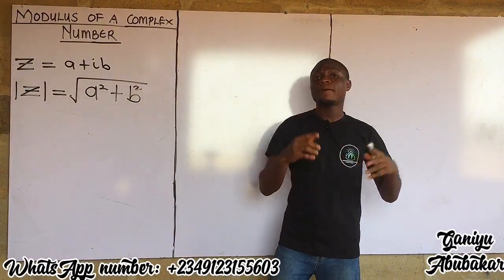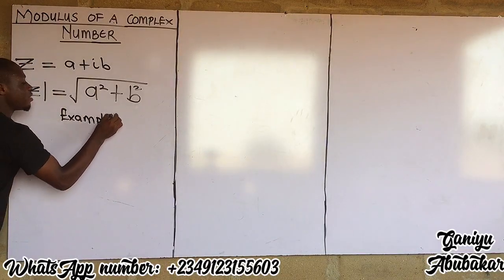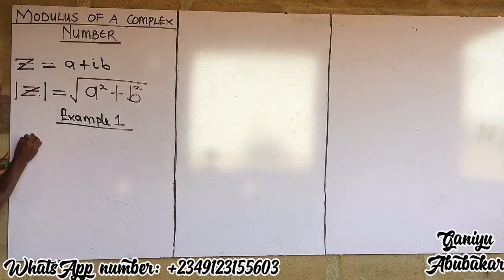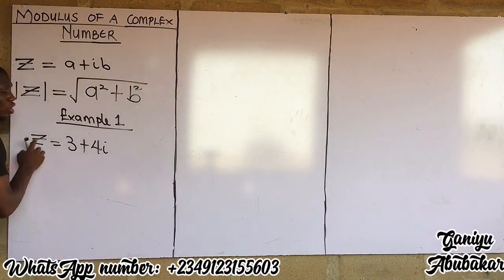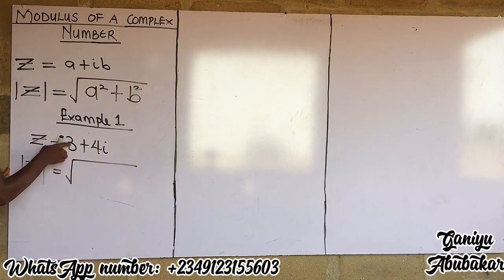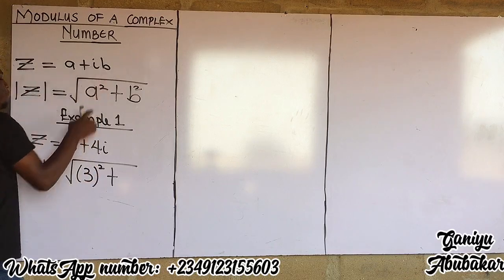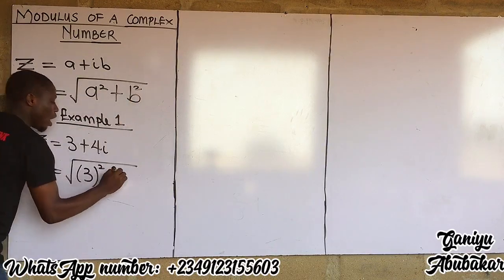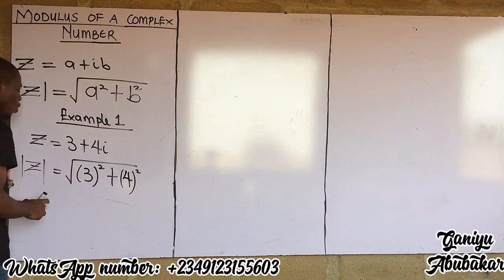Example one: given a complex number z equal to three plus four i, the modulus of this complex number is written as the square root of three squared plus four squared. Here three represents a and four represents b.